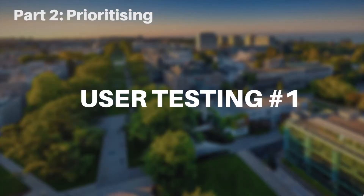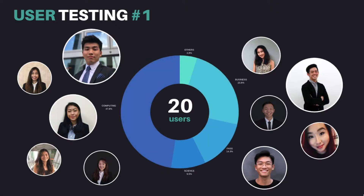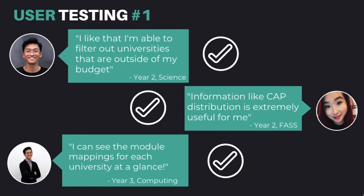Next, our prioritising phase. Our features were presented to our users for a second round of user testing. We showed our Clickable prototype to 20 users who have gone on exchange in the past two years across five different faculties and asked them what features they found useful and not useful, as well as what other features they would like to see. Users found that being able to filter partner universities by average expenditure and CAP was useful, so they do not need to waste time applying for universities outside of their budget and academics. They also found that seeing a list of pre-approved modules and popular mapped modules for each university helpful, as this was one of the highlighted pain points for our users.